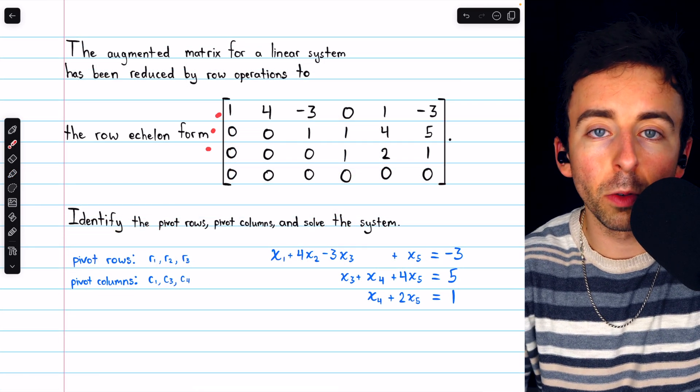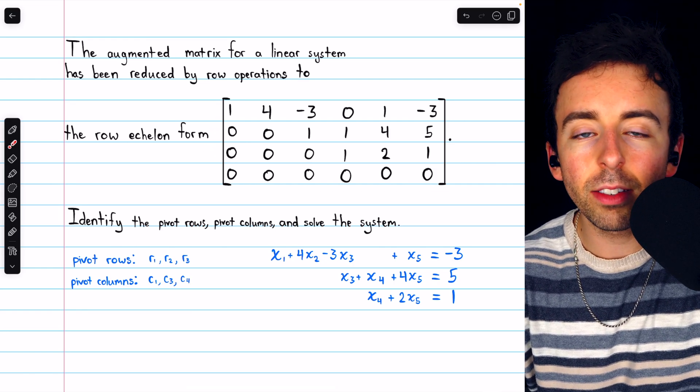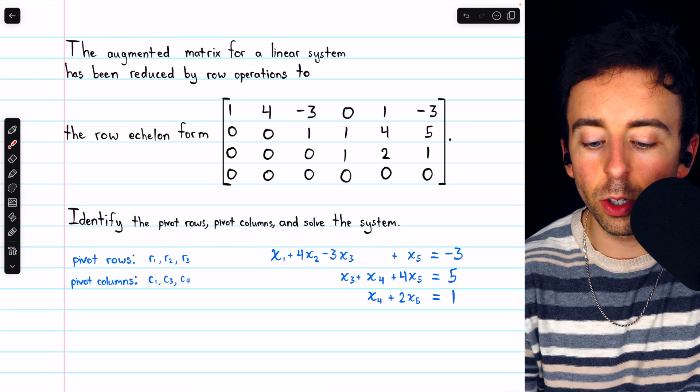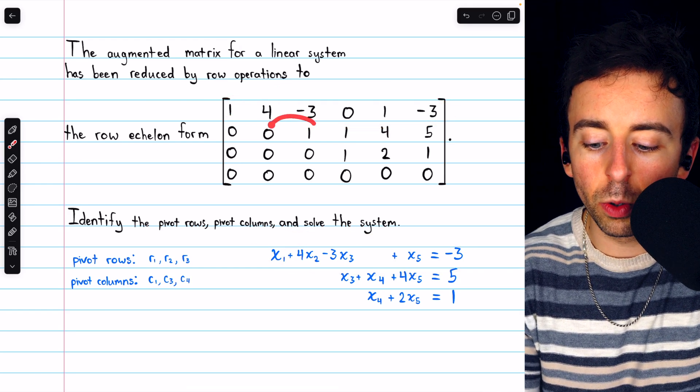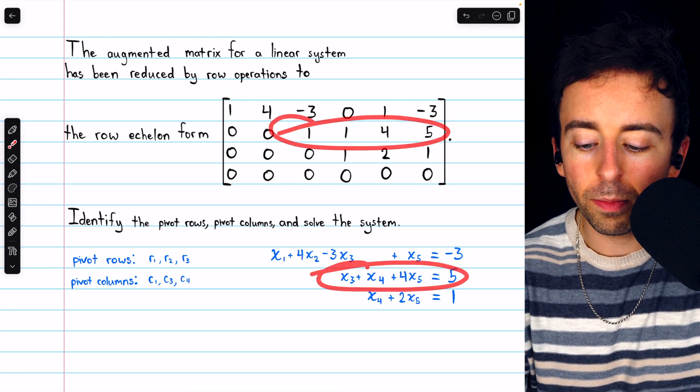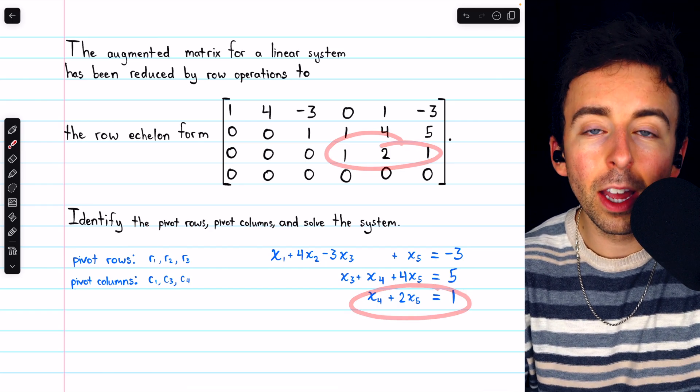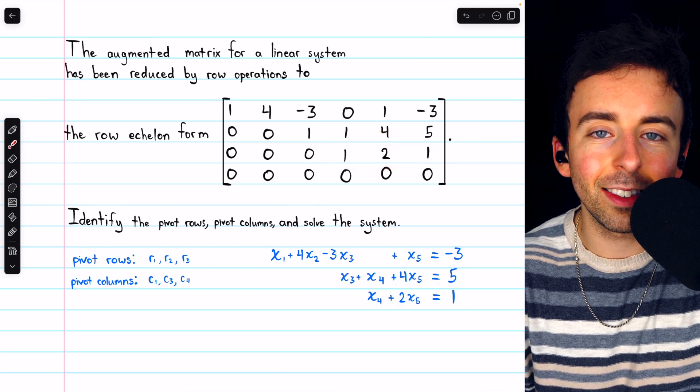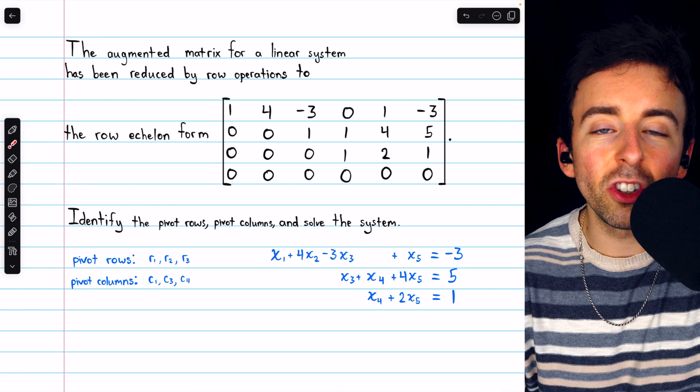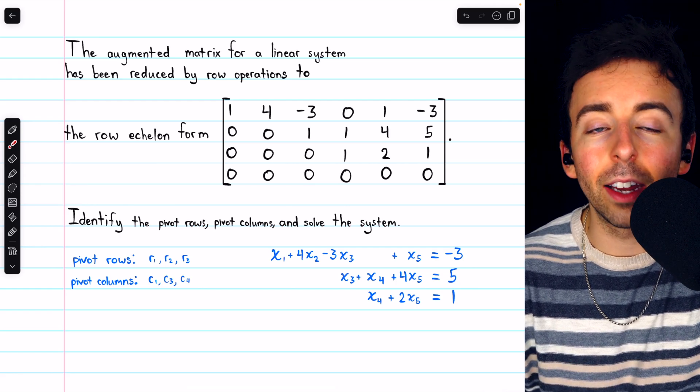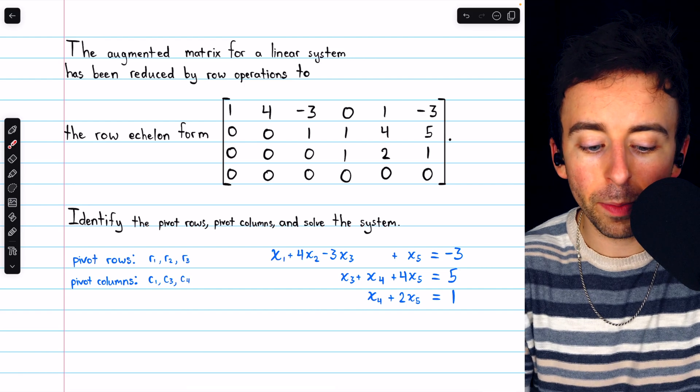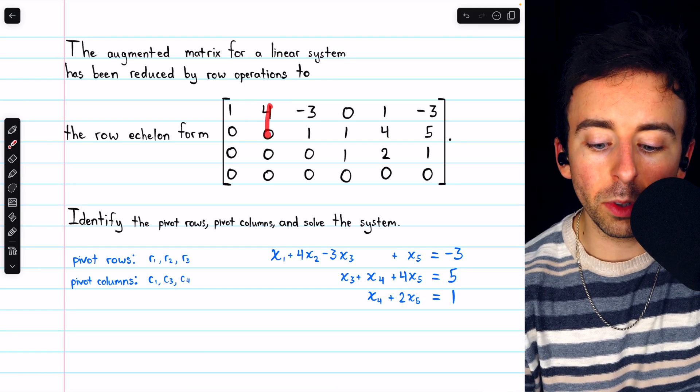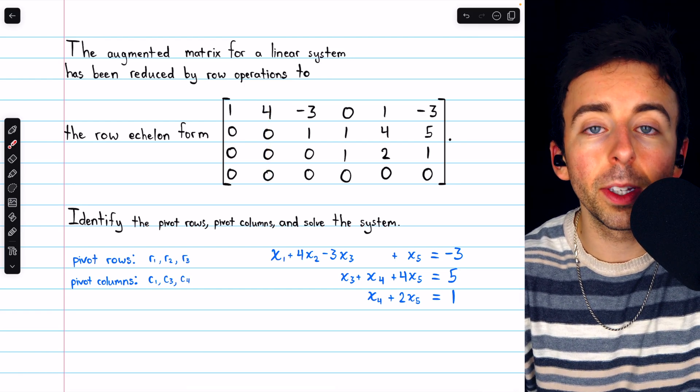Now we can use each row to write a corresponding equation and solve the system using back substitution. Row 1 gives us this equation, row 2 gives us this equation, and row 3 gives us this equation. Pivot columns are important in this case because any column which isn't a pivot column and corresponds to a variable indicates a free variable. So, for example, column 2 corresponds to the variable x2.